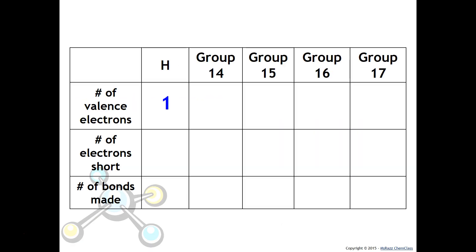The number of electrons short for hydrogen is one, group 14 is four, group 15 is five, and so forth. By 'electrons short' I mean the number of electrons short from being isoelectronic with a noble gas. Hydrogen needs to gain one to be isoelectronic with helium; group 14 would gain four, group 15 would be three, group 16 would be two, and group 17 would be one. As it turns out, the number of electrons short is the same as the number of bonds made.